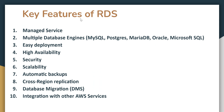Let's look at the key features of RDS. First, it is a managed service — all installation, configuration, security updates, and software updates are managed by AWS. You just select the database engine you want and create it. It provides multiple database engines: MySQL, Postgres, MariaDB, Oracle, Microsoft SQL, and also AuroraDB, which is AWS's proprietary database engine. It is also very easy to deploy via the console, CLI, or APIs, and you can get it up and running within seconds.